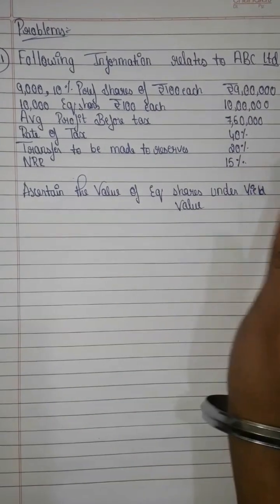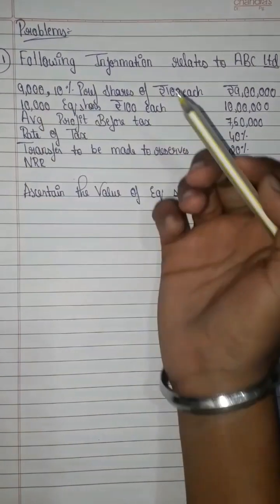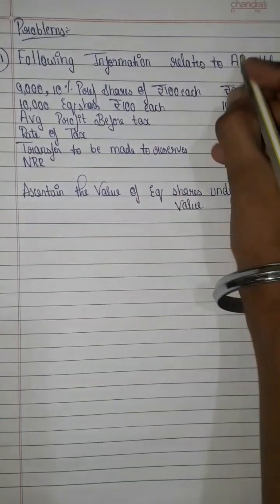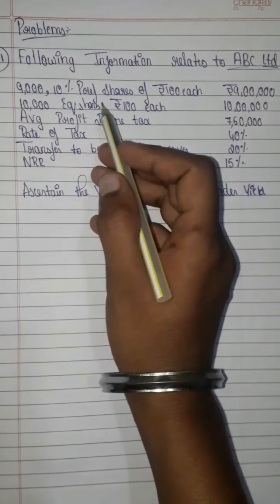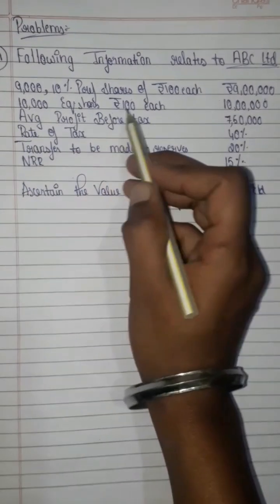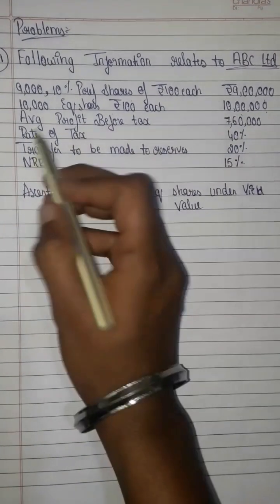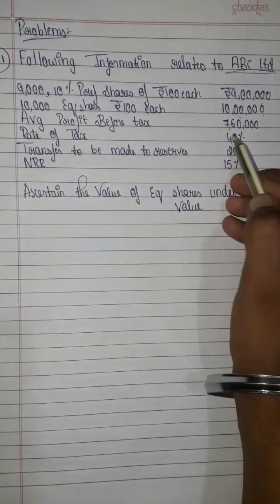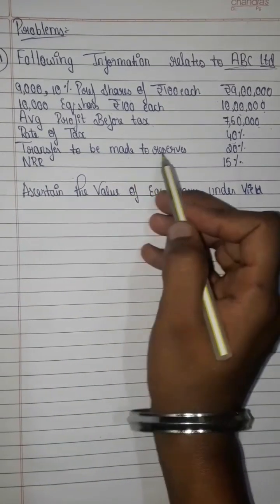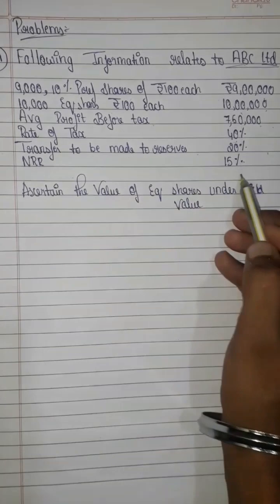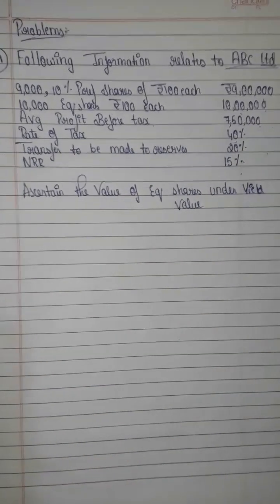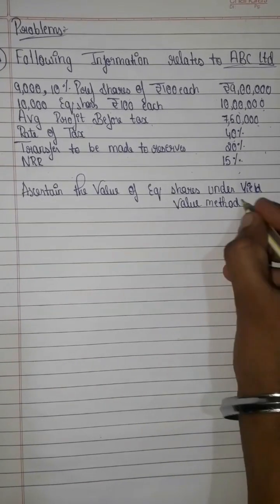Now let's solve a sum using the yield value method. The following information relates to ABC Company: 9,000 10% preference shares of rupees 100 each totalling 9 lakh; 10,000 equity shares of rupees 100 each totalling 10 lakh; average profit before tax 7 lakh 50,000; rate of tax 40%; transfer to reserves 20%; NRR 15%. Ascertain the value of equity shares under the yield value method.